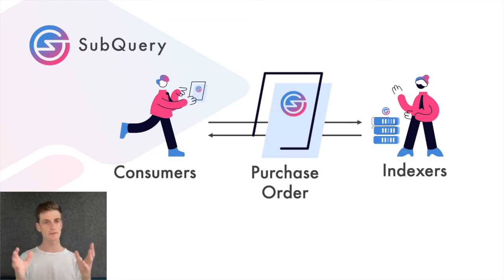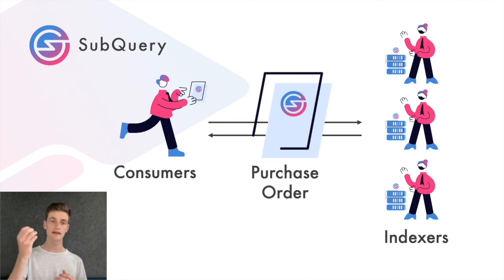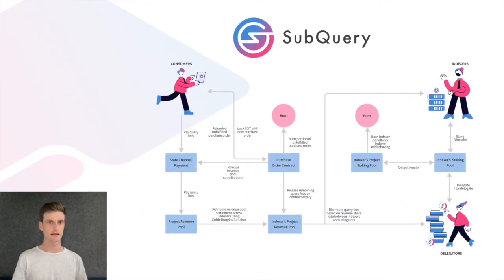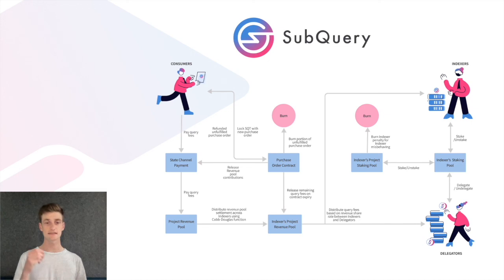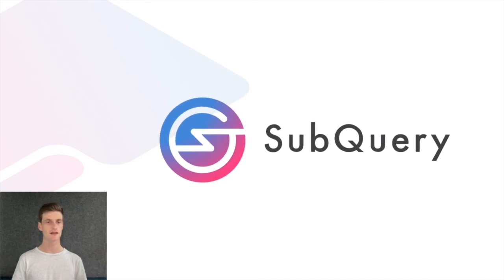Purchase orders can also be placed on existing SubQuery projects to attract additional indexers in, to improve competition and decrease prices. The SubQuery network looks to move towards a globally decentralised network of participants, organising blockchain data in order to ensure that there is no single point of failure. The SubQuery network is a simplistic solution, but is powerful enough to power the future of serverless applications in the Polkadot and Substrate ecosystem.